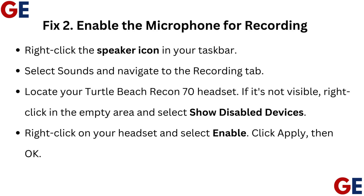Fix 2: Enable the microphone for recording. Right-click the speaker icon in your taskbar, select Sounds, and navigate to the Recording tab. Locate your Turtle Beach Recon 70 headset. If it's not visible, right-click in the empty area and select Show Disabled Devices. Right-click on your headset and select Enable. Click Apply, then OK.